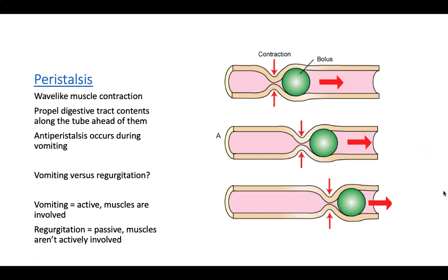Peristalsis is a wave-like muscle contraction that propels digestive tract contents along the tube. Anti-peristalsis occurs during vomiting — essentially reverse peristalsis. Normally when an animal swallows, a contraction behind the bolus of food pushes it down the esophagus into the stomach. During anti-peristalsis, the contraction occurs on the other side, pushing food back up.